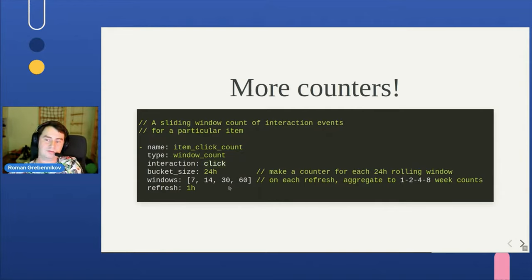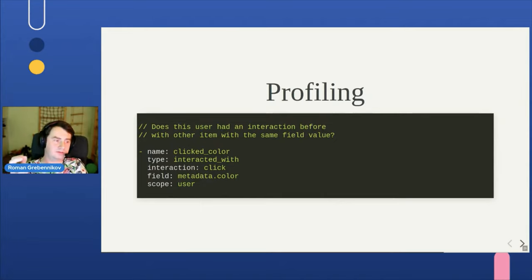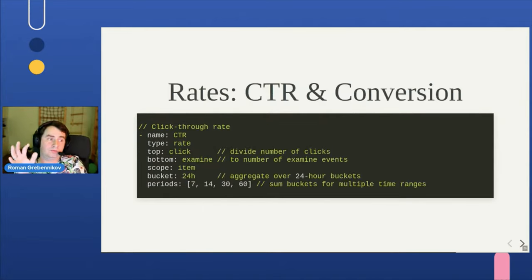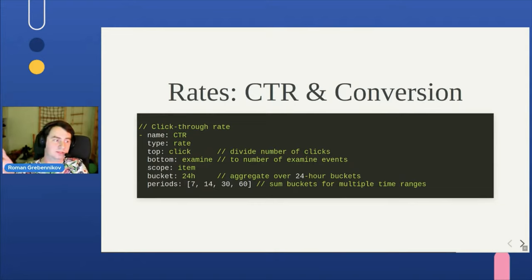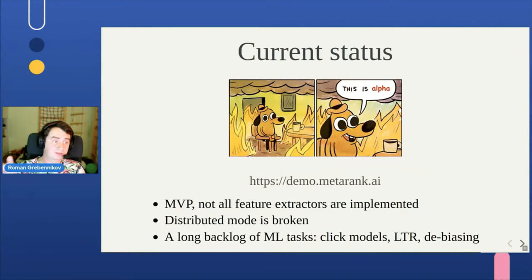Time windows are implemented, so you can compute things like how many clicks were made in 7, 14, 30, and 60 days. You can also do customer profiling — for example, whether this customer clicked on red products before — or compute rates like dividing number of clicks by number of impressions to get CTR, or the same thing for conversions and purchases. Number normalization is also supported.